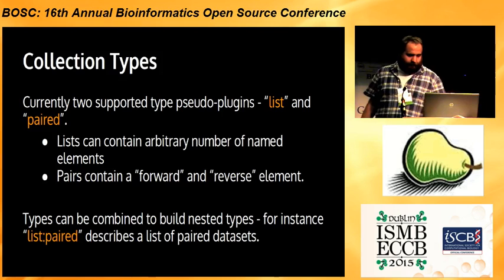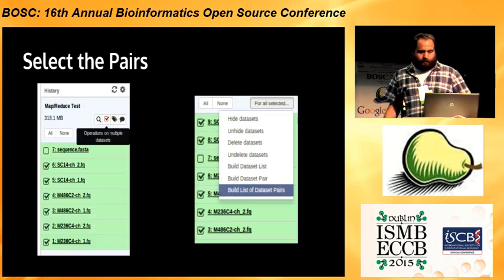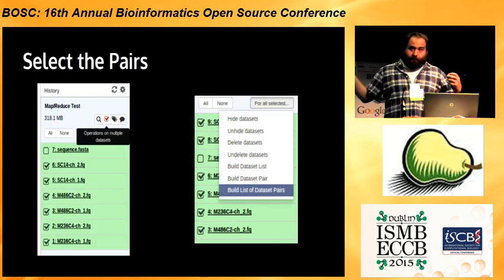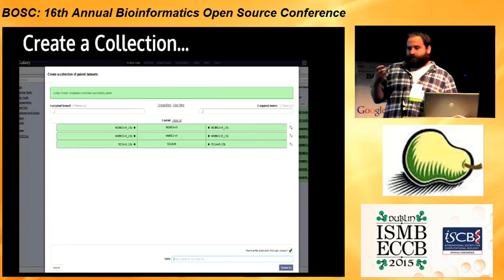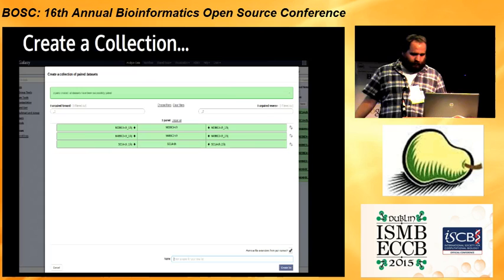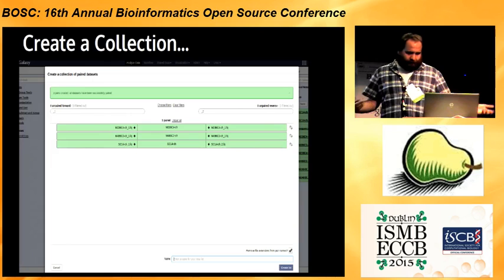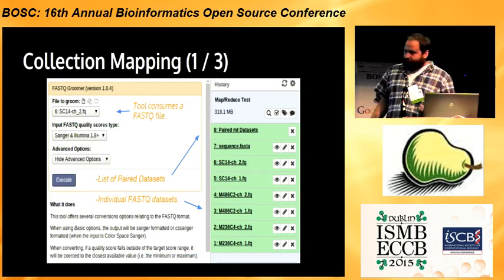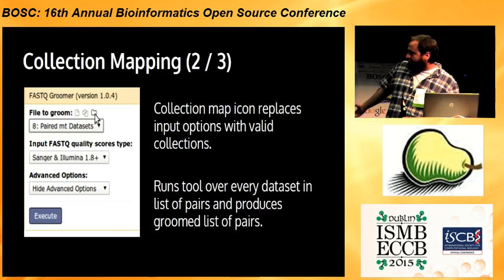To walk through the interface: let's start by uploading a bunch of FASTQ files and a sequence file to map against. In the Galaxy interface, after you've uploaded them, you can select them and click 'build list of dataset pairs.' These images are a little bit out of date, but we have a really nice interface that allows even a biologist who doesn't understand regular expressions to use them if they want, or do this via clicking, to build these advanced data structures. Once you have this dataset collection, you can map an operation over it — here we have a FASTQ groomer tool that takes a FASTQ file and builds a new one, running the tool over each element of the collection and returning a new list of pairs.